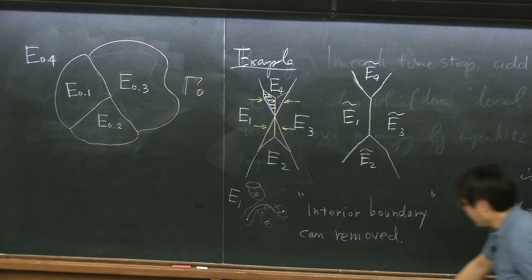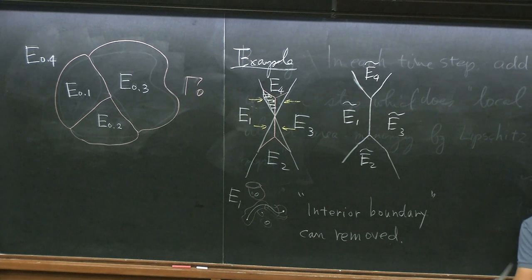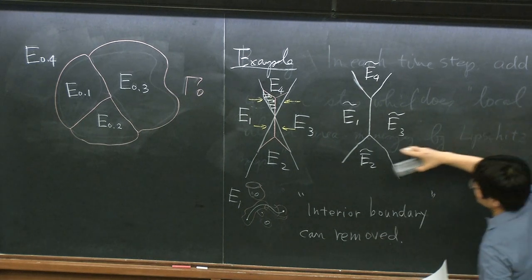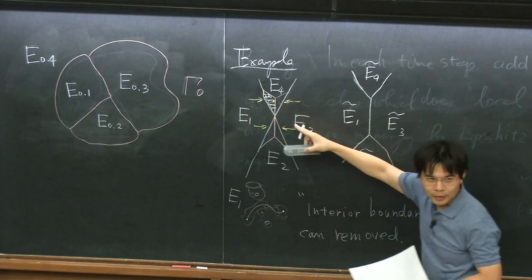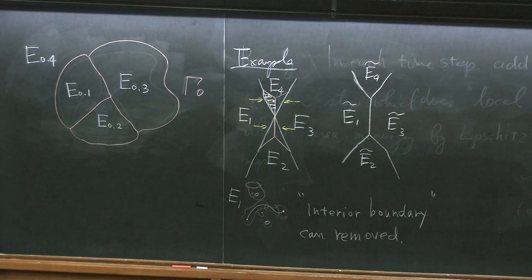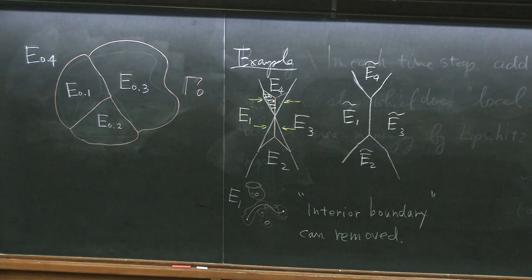This cannot be C1, for example, because this type of map is called a retraction, and this kind of retraction cannot be C1 — it has to be Lipschitz. So now I define this Lipschitz deformation, which I'm going to use to minimize the area.